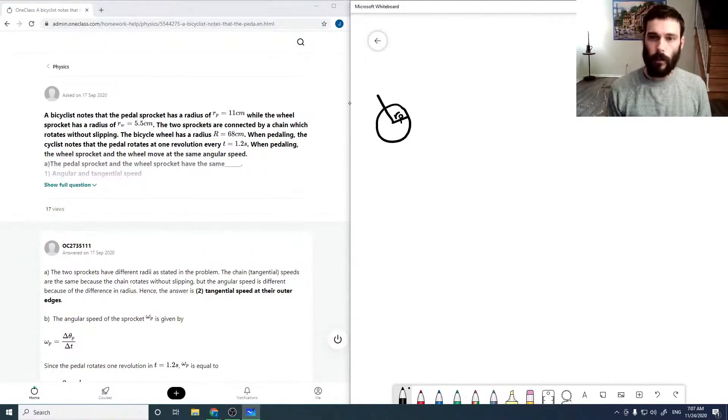And so that would be attached to a pedal, and this is attached to a wheel sprocket of radius Rw, and these two are attached by a chain.